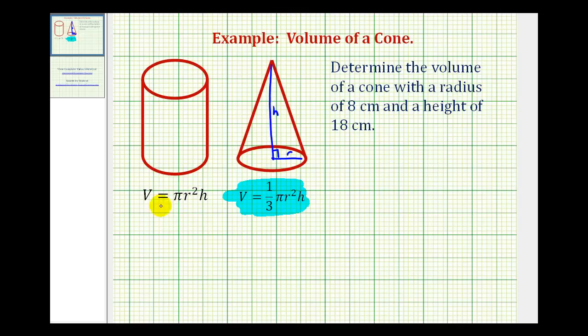Notice how I also gave the formula for the volume of a cylinder. The reason I did this is, if the radius of the cone and the cylinder are the same, and the heights are also the same, notice how the volume of the cone would be one-third the volume of the cylinder.